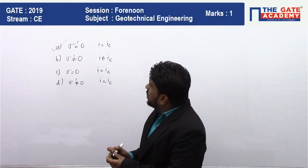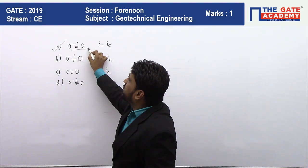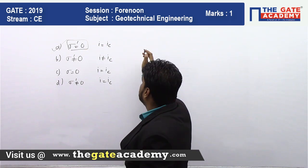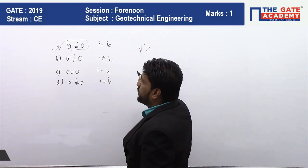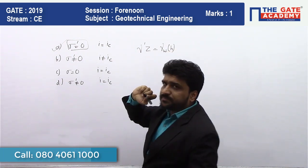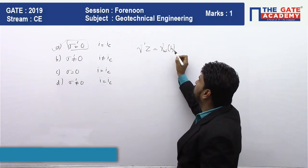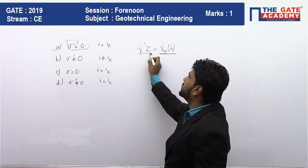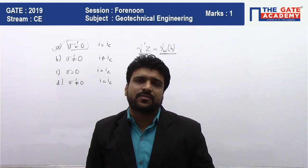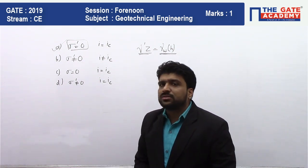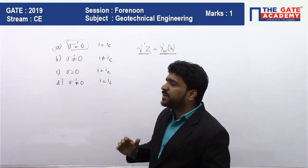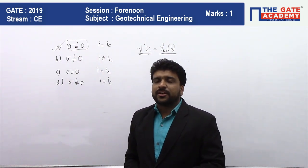This is why effective stress becomes zero. In the case of quicksand condition, the submerged unit weight becomes equal to γw × h, where γw × h is the upward seepage pressure. When the upward seepage pressure equals the submerged unit weight, your effective stress becomes zero. So the answer is Option A. This was a very easy question from CPH analysis — a basic definition question. Thank you so much.